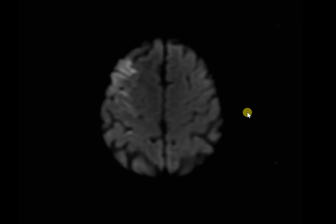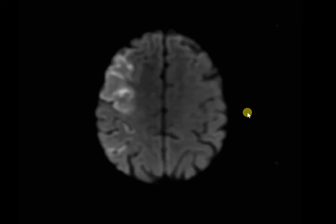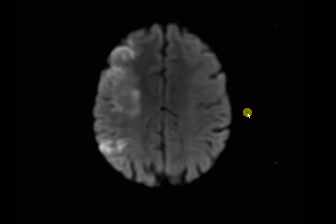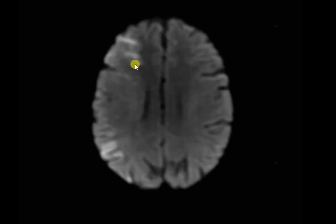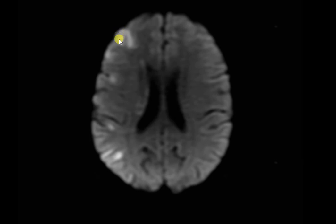This is a 30-year-old male patient presented with acute left-hand weakness or hemiplegia involving both upper and lower limbs. Axial diffusion weighted images are showing diffusion restriction areas in the frontal lobe,